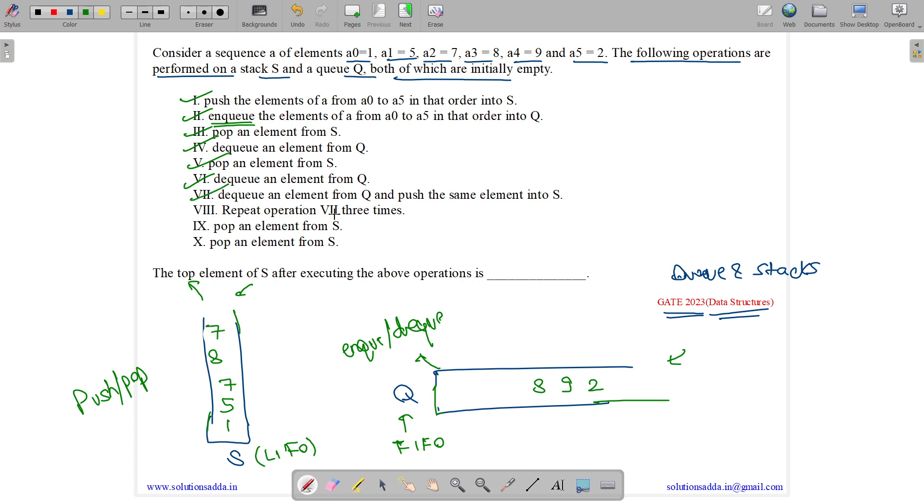Repeat operation 7 three times. So we have, 8 will be dequeued and pushed over here one time, 9 will be dequeued and pushed over here second time, 2 will be dequeued and pushed over here third time. We have stack like this now.